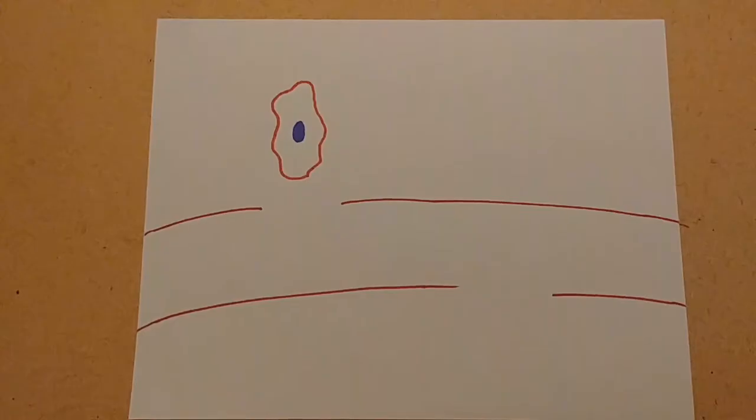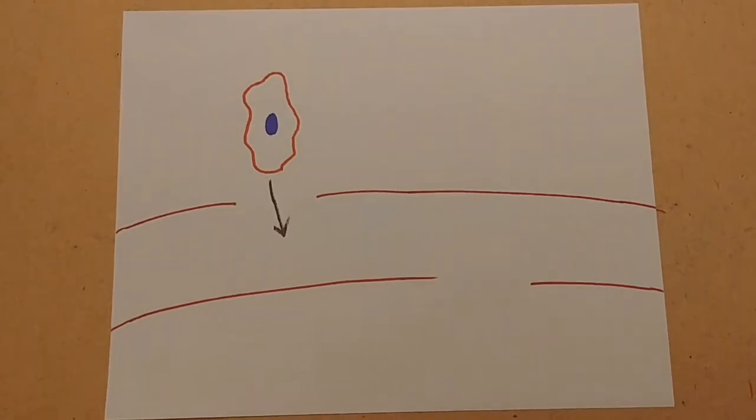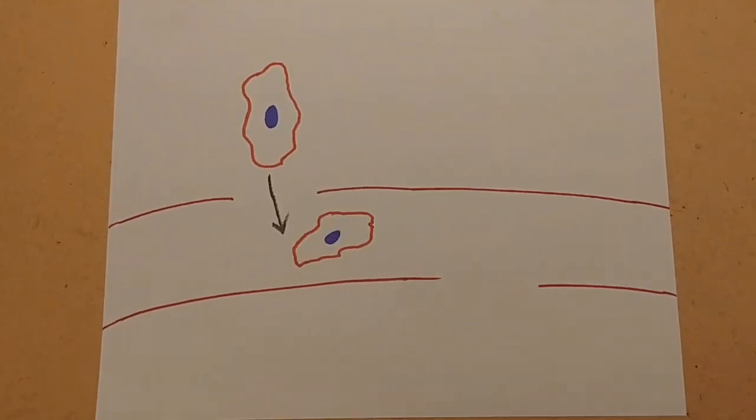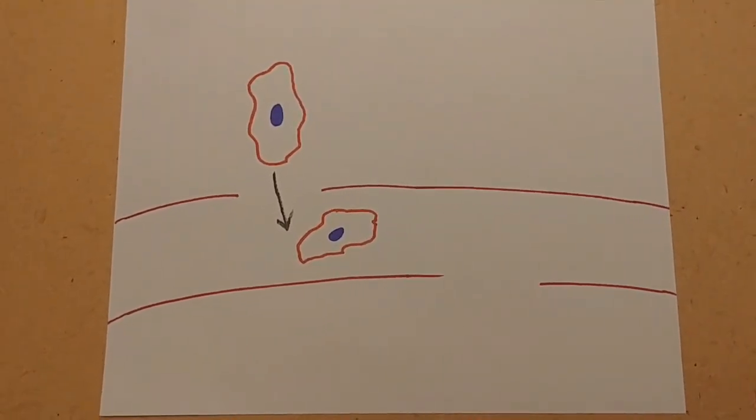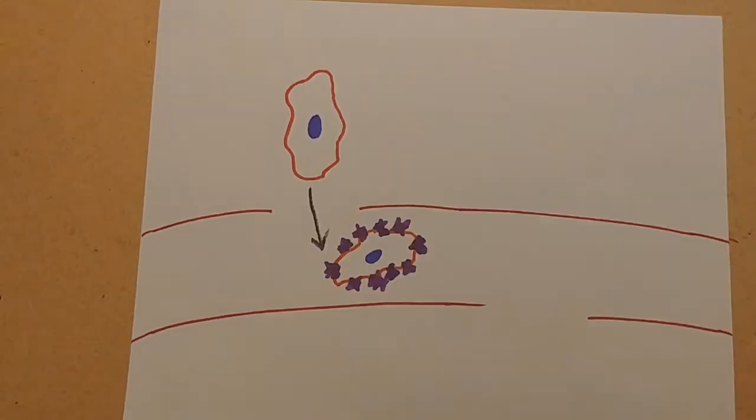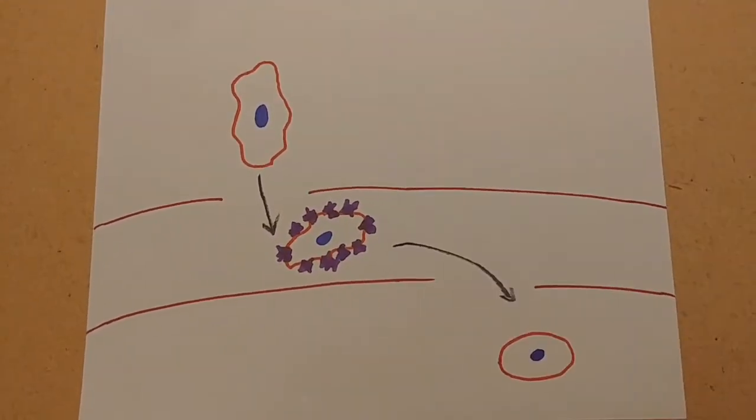When the migrating cells enter the circulatory system, platelets bind to them, disguising the cancer cells from the immune system. This allows the cells to move through the bloodstream undetected, eventually settling in secondary tumor sites.